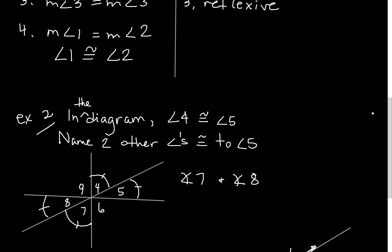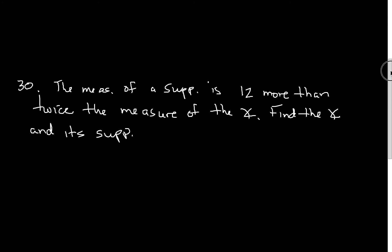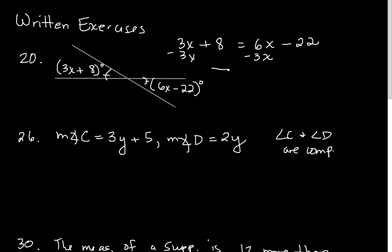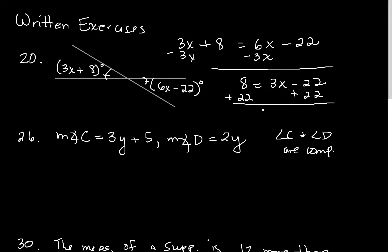Now let's look at a couple of problems from the written exercises. Number 20: find the value of x. These are vertical angles, and vertical angles are congruent, so we set their measures equal: 3x plus 8 equals 6x minus 22. Subtract 3x from both sides: 8 equals 3x minus 22. Add 22 to both sides: 30 equals 3x. So x equals 10.